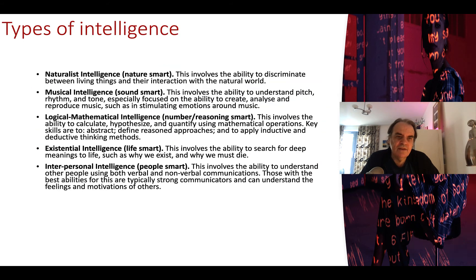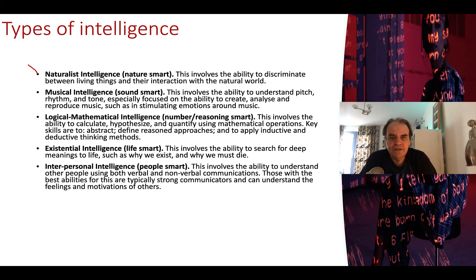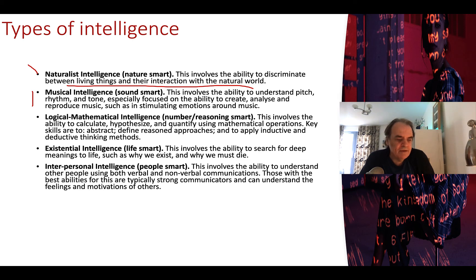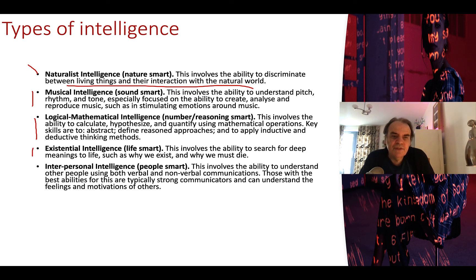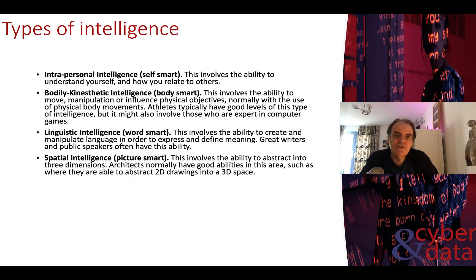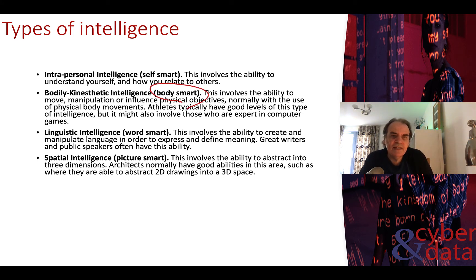Increasingly, machines are showing some signs of human-type intelligence in the way they can reason. Types of intelligence include: Naturalist intelligence — the ability to discriminate between living things and their interaction with the natural world; Musical intelligence; Logical-mathematical intelligence — number and reasoning abilities; Interpersonal intelligence — people smart; Intrapersonal intelligence — understanding oneself; Body-kinesthetic intelligence — body smart; and Linguistic intelligence — word smart.